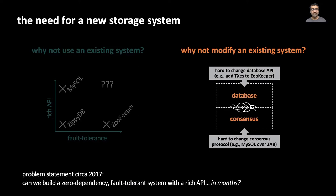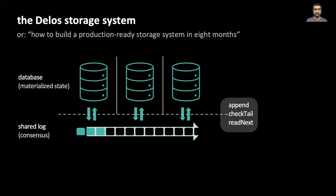So our problem statement in 2017 was to build a new system that is both fault tolerant and had a rich API. And as our control plane was evolving rapidly, we had to hit production with this system within months. To achieve this goal, we built Delos using a shared log design.